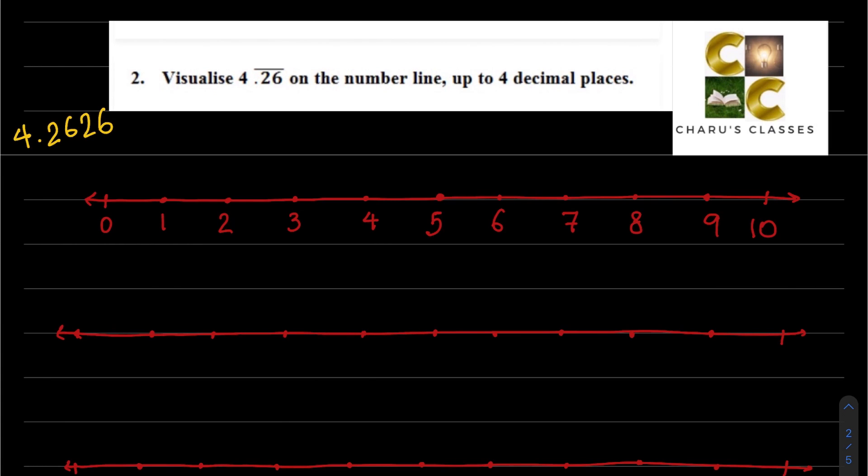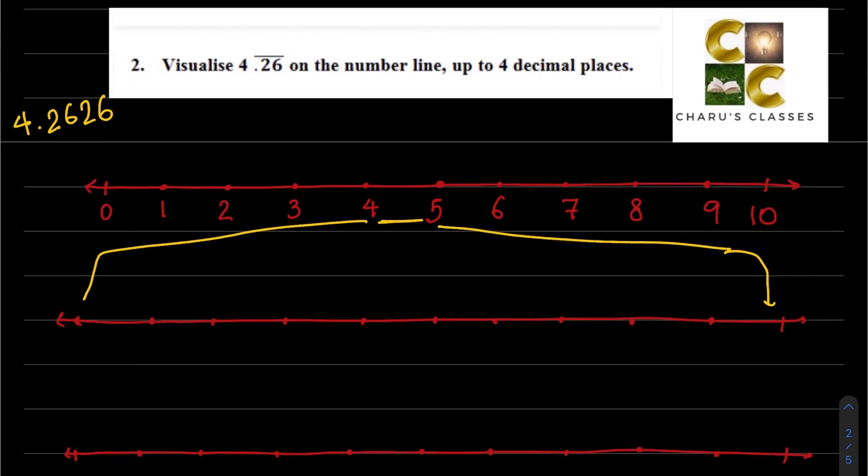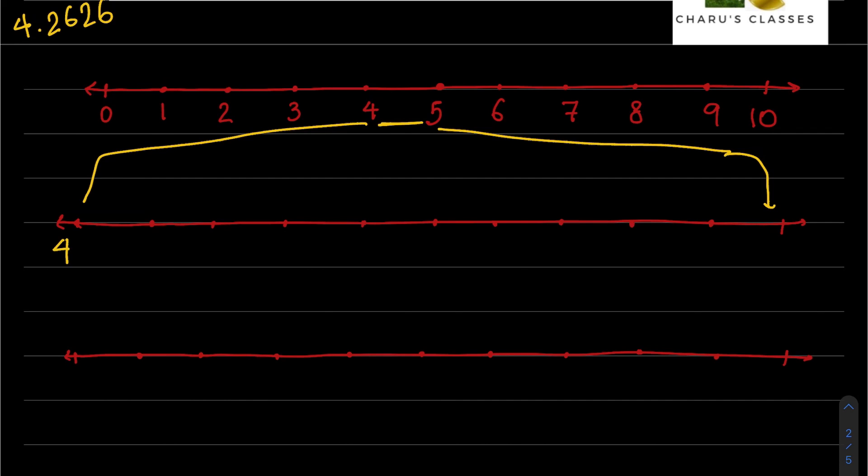So first we make 0 to 10 number line. We need 4.2626. It will be between 4 and 5, so we magnify the 4 and 5 portion. This is 4 and this is 5.